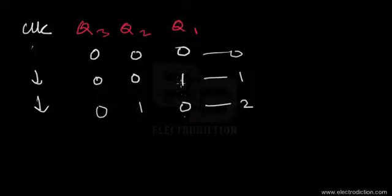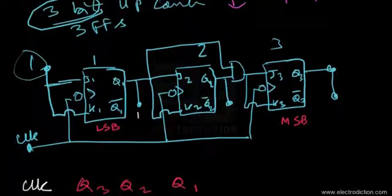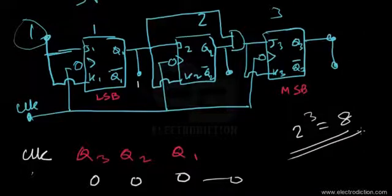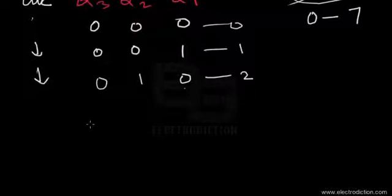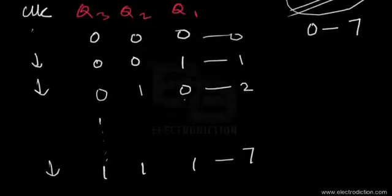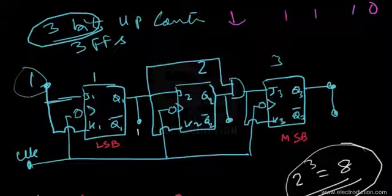The up counter represents a forward counter where the count increases state by state. Since it's a 3-bit up counter, the maximum number of counts is two to the power of three, which is eight. The counter goes through eight binary states, counting from zero up to state seven — that is, binary one-one-one — triggered by the negative edges of the clock pulses.